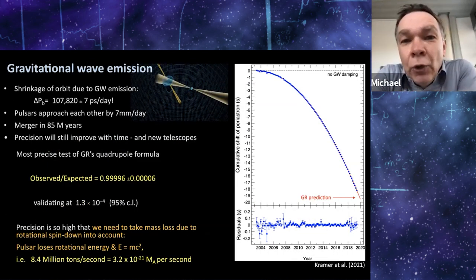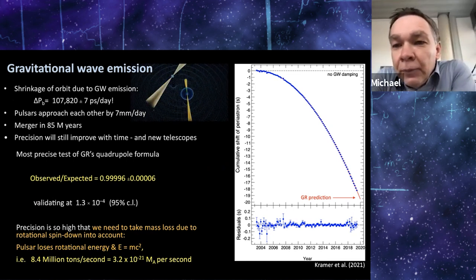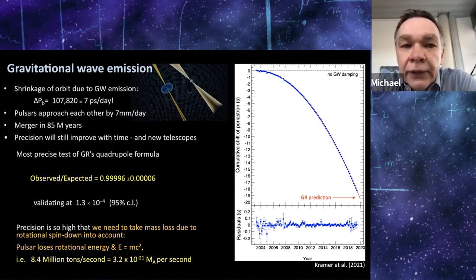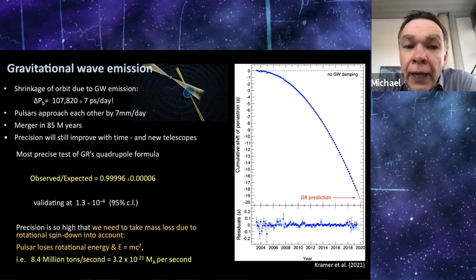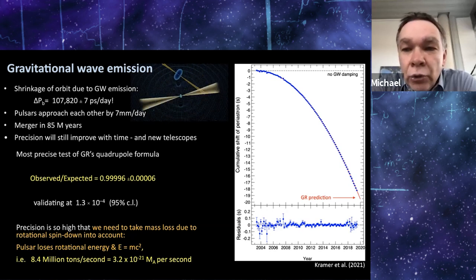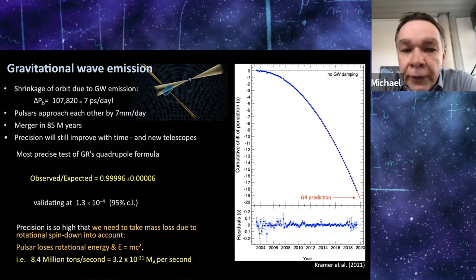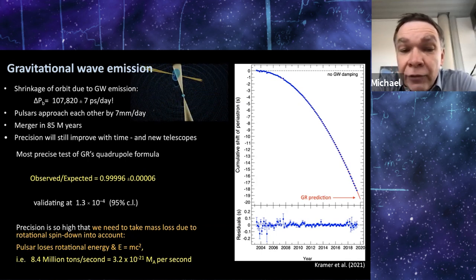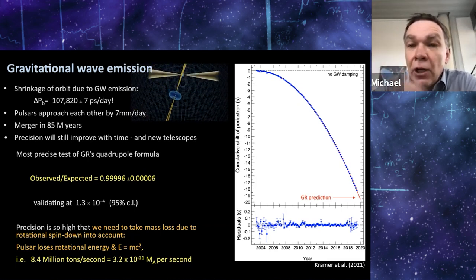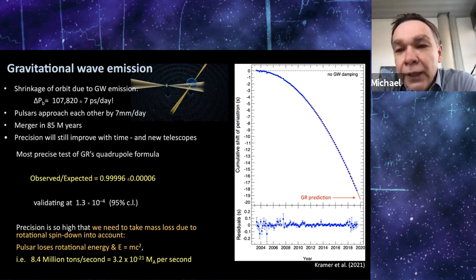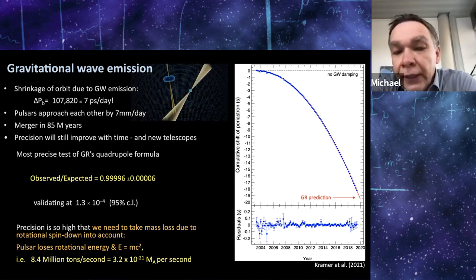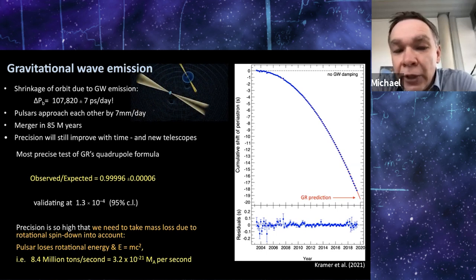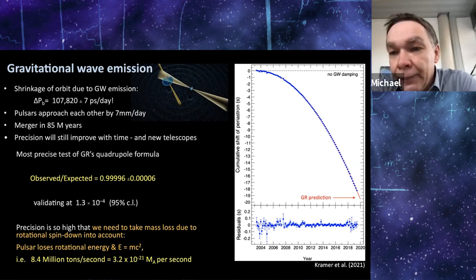Of course, we do measure the orbital period decay. And here you see the parabola for the double pulsar. It's nicely sampled. The pulsars approach each other by about 7 millimeter a day, or the orbit shrinks by 107,820 plus minus 7 picoseconds. And the expectation from GR compared to the observation is in agreement at a level of 1.3 times 10 to the minus 4. This is the most precise test of the GR quadrupole formula that exists right now. And our precision is actually so large that we have to take the mass loss of the rotational spin down into account. As the pulsar spins down by emitting electromagnetic waves, the period changes. And that loss in energy is to be taken into account. And this is about 8.4 million tons per second. But on the other hand, it's only 3.2 times 10 to the minus 21 of the mass of pulsar A.